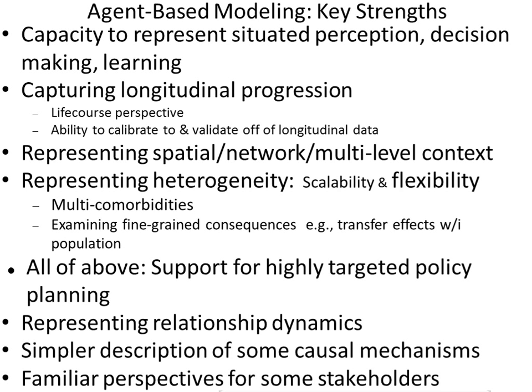Within agent-based modeling, we can represent spatial context and networks. We can situate people in GIS, in a context informed by GIS information. And we can represent heterogeneity on the part of an individual in the form of multiple comorbidities, or fine-grained consequences associated with interventions, such as transfer effects from one subgroup to another. All of these factors end up supporting highly targeted policy planning.